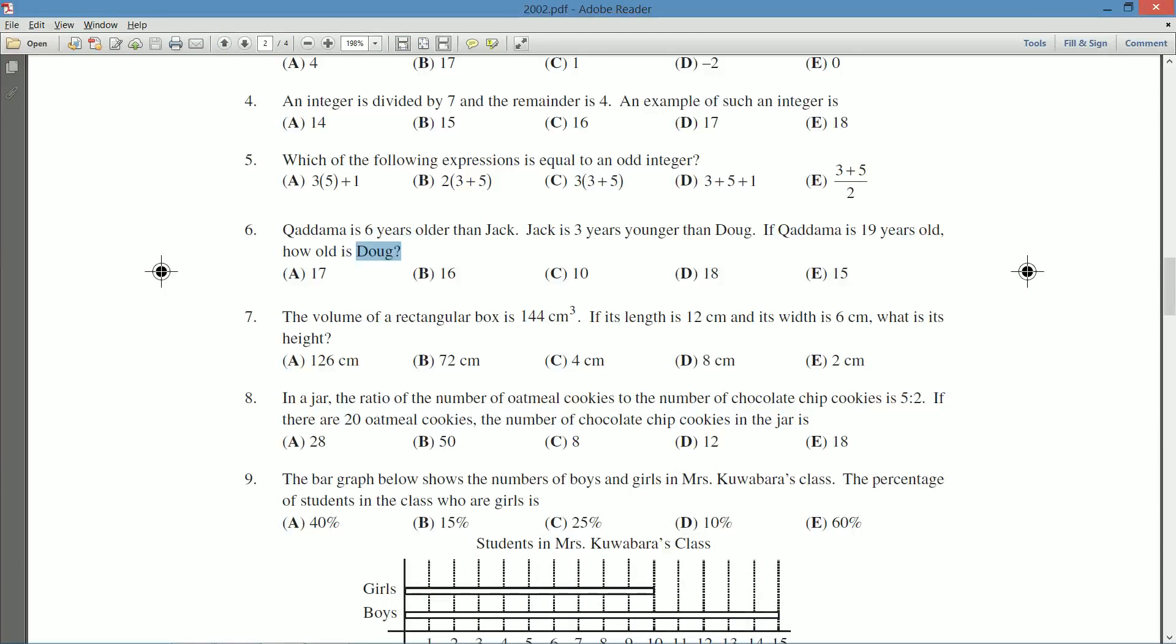Well the only information we have about Doug is that he's 3 years older than Jack. Jack is 3 years younger than Doug. So, the only relation we have is Doug to Jack. If we knew Jack's age, we'd be done. We could figure out what Doug's age is.